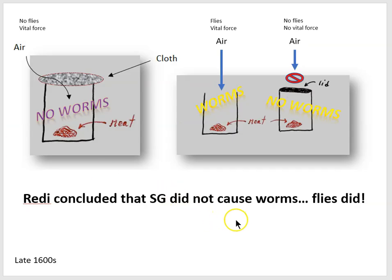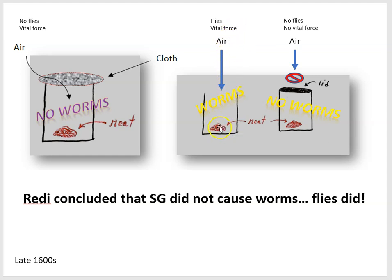Finally, in the 1600s, Francisco Redi put spontaneous generation to the test in a simple experiment. Take a look at the left side of the diagram here. We have two conditions: a jar that is open and a jar with meat in both. It was commonly believed that meat could spontaneously generate into worms — that some vital force interacted with the dead meat to spontaneously produce worms.